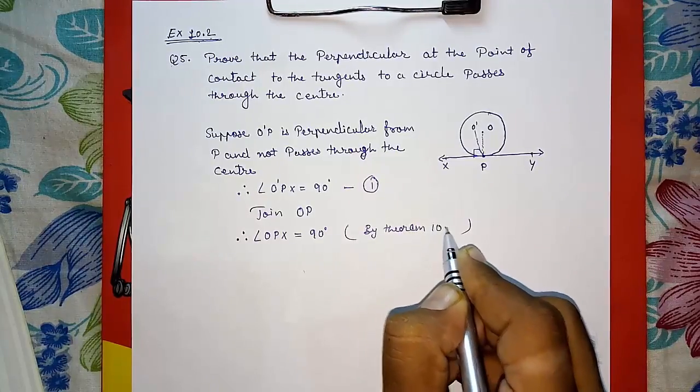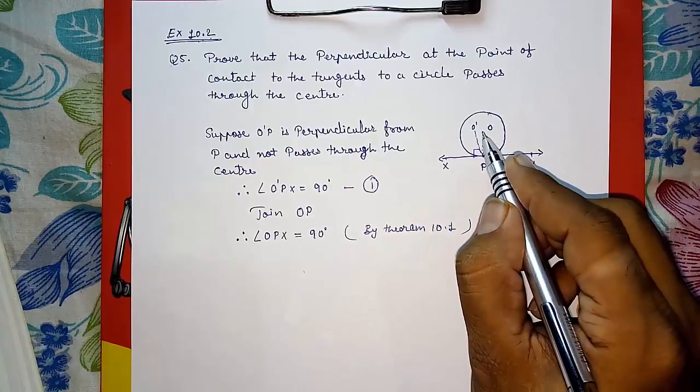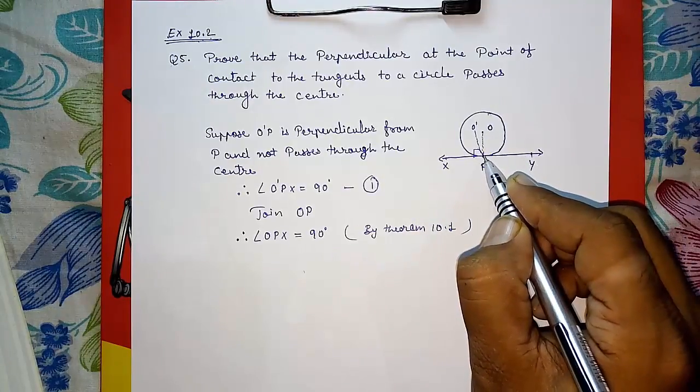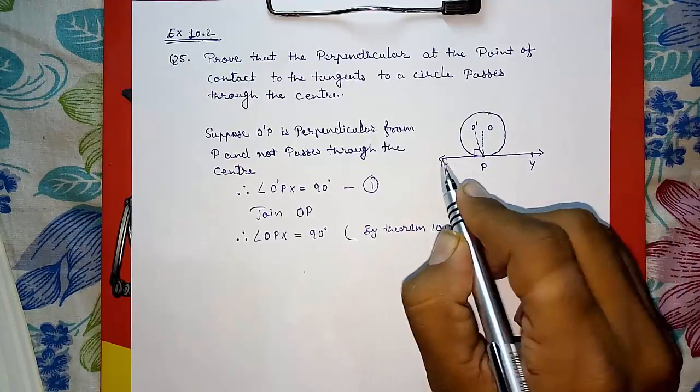Theorem 10.1 states that from the center, if we draw to the point of contact, then that radius will be perpendicular to the tangent. This is result number two.